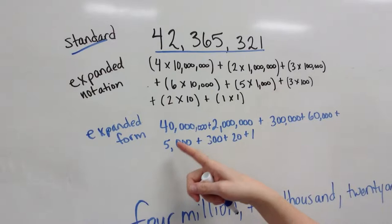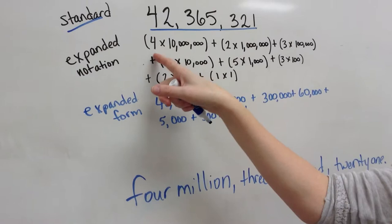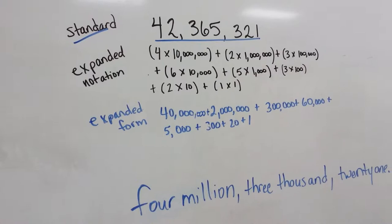And then expanded form, where the value is already shown inside. So instead of like up here where we did four times ten million, it just shows forty million already together.